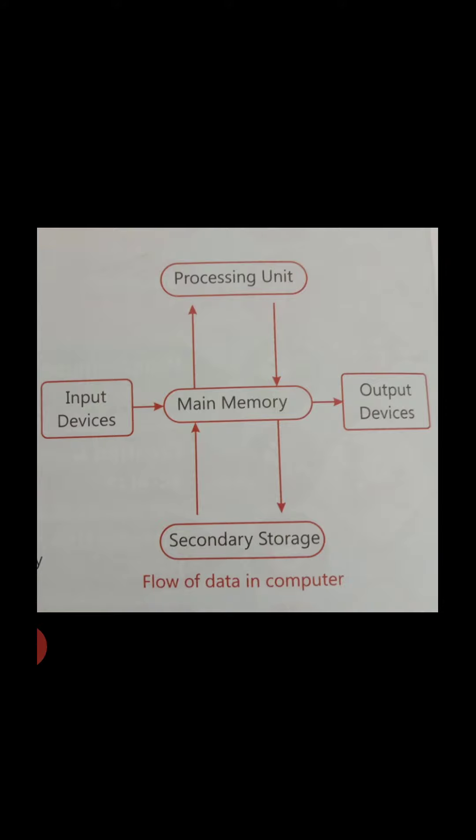RAM is also known as volatile memory. Why we are saying that RAM is volatile memory? Because it keeps the data on a temporary basis. The data will be deleted after the power is switched off or the computer is switched off.